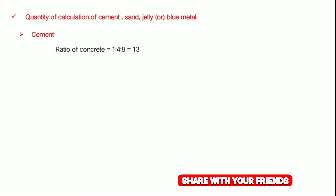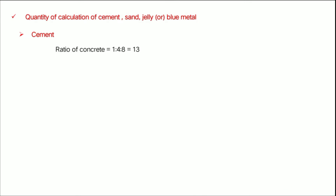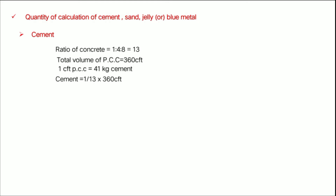Let's look at the cement, sand and jelly ratio. In PCC, the ratio is 1:4:8. If you add cement, you can add 1.3 cubic meters. Total volume of PCC is 360 CFT. If we add 1 CFT to PCC, we add 41 kg cement. Total cement: 360 CFT × 41 kg = 1,150 kg of cement.